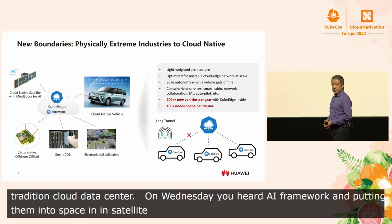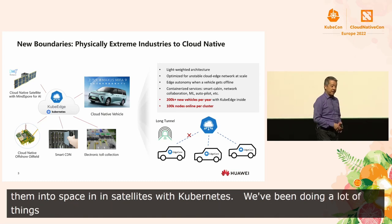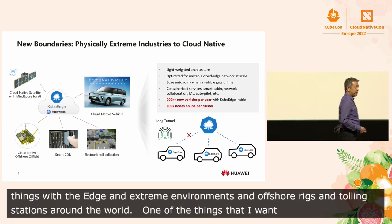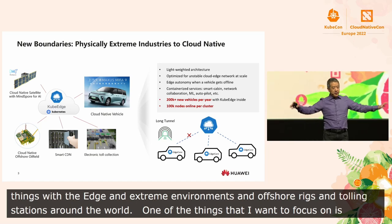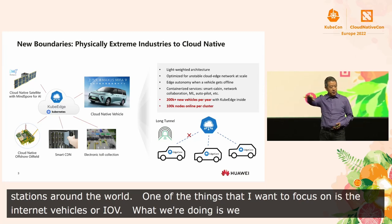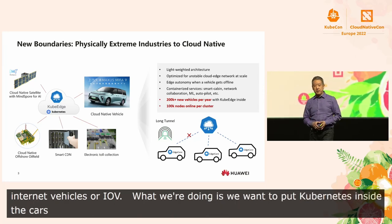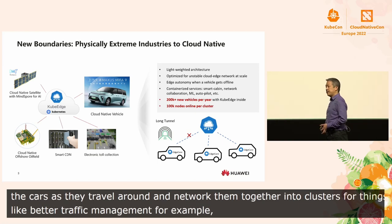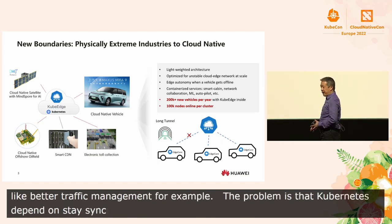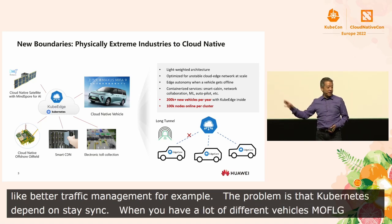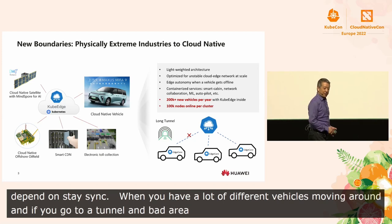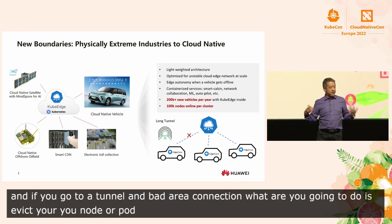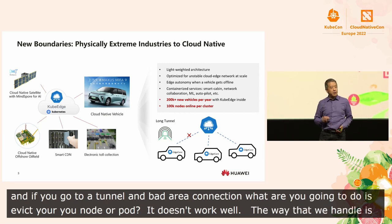We've been doing a lot of other things at the edge in extreme environments — going into offshore oil rigs, or dealing with tolling stations around the world. But one of the things I want to focus on is this use case around Internet of Vehicles, or IoV. Basically, we want to put Kubernetes inside all these different cars as they travel around and network them together into clusters for things like better traffic management. The problem, though, is that Kubernetes depends on state sync. And when you have a lot of different vehicles moving around — if you enter a tunnel, if you go into an area with bad network connection — what are you going to do? Are you going to evict your node or your pod? It doesn't work so well when there are vehicles driving around the road. The way we've been handling that traditionally is to default and fall back to things like a data sync, and that works okay, but it's not really cloud native.